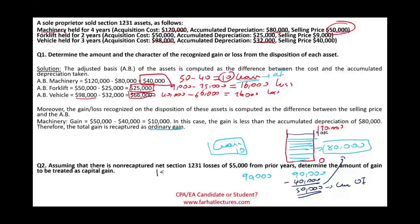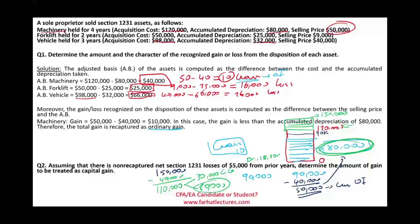Now let's assume I sold the asset for $150,000, which is above the original cost of $120,000. With an adjusted basis of $40,000, the total gain is $110,000. The amount above the original cost — which is $30,000 — is long-term capital gain, subject to 0%, 15%, or 20% rates. The remaining $80,000, equal to the accumulated depreciation, is ordinary income. The key point: any depreciation recapture is considered ordinary income.